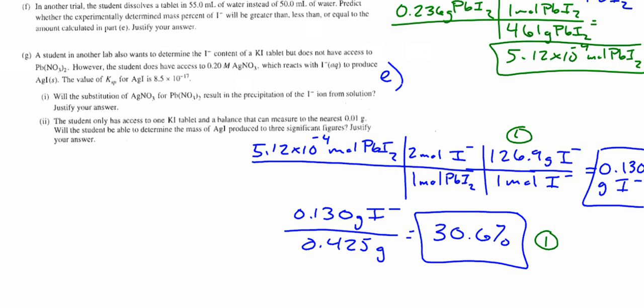So that was the last actual calculation. I want to quickly just take the last few minutes and do the last couple letters here. We'll see how far we get. It says, in another trial, the student dissolves a tablet in 55 mils of water instead of 50 mils of water. Predict whether the experimentally determined mass percent of I2 will be greater than, less than, or equal to. What will it be? Equal to. Equal to, because all of the I reacted, didn't it? It doesn't matter then. It already dissolved. The Pb was in excess. So all the I dissolved, and we're not changing the size of the tablet or anything like that. Like, some of these, you can't overthink it.